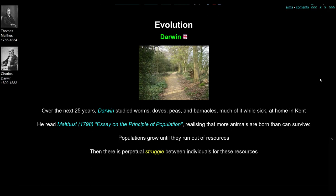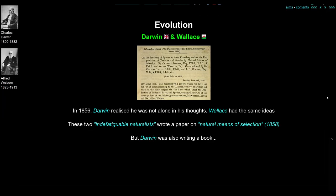Over the intervening decades between coming back from the Beagle in 1836 and writing his famous book in 1859, Darwin was collecting his evidence very carefully and slowly. In 1856, he was told that Alfred Russell Wallace had also had the same idea about evolution — that it was a sort of natural selection of characters.